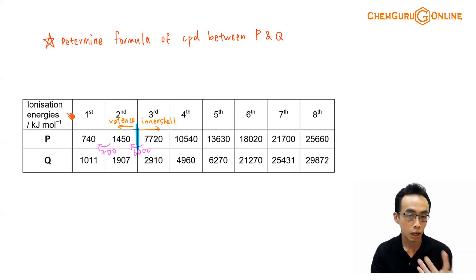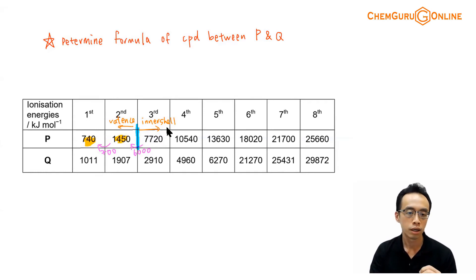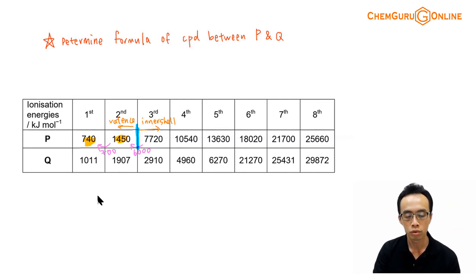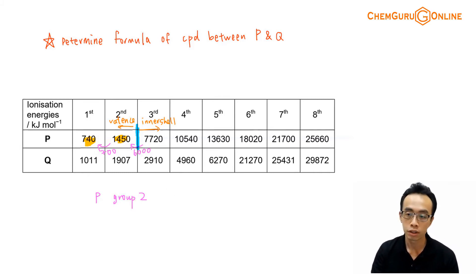So for element P, all electrons to the left of the big jump are valence electrons. How many valence electrons does P have? The first electron is a valence electron, the second electron is also a valence electron — so P has two valence electrons. The third electron is from an inner shell. Therefore P is in group 2, which means P is a metal.